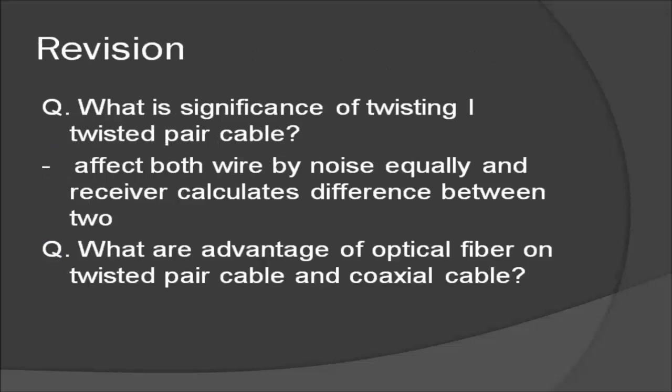What is the significance of twisting the twisted pair cables? By twisting the wires, the noise equally affects both the wires. So when the receiver receives the information, it can calculate the difference between the two and so the noise can be removed totally.